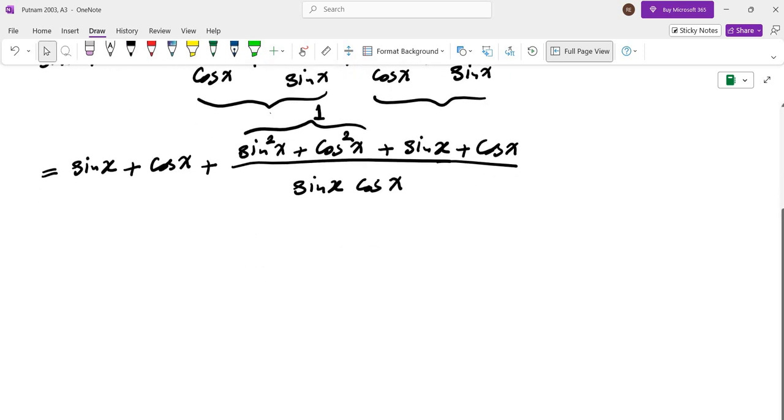Now we also know that sine plus cosine squared can give us sine times cosine. So let's take that as u. u equals sine of x plus cosine of x.